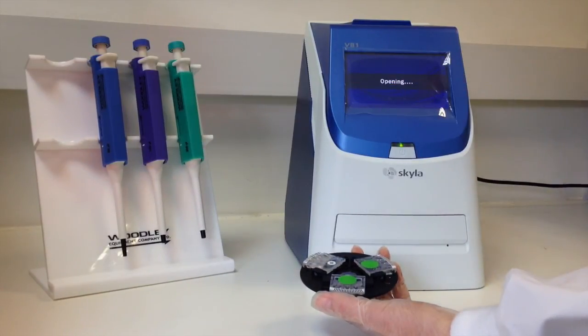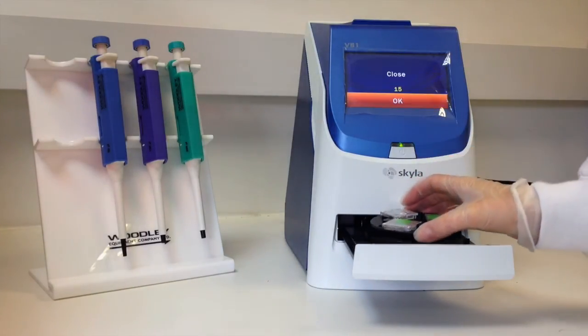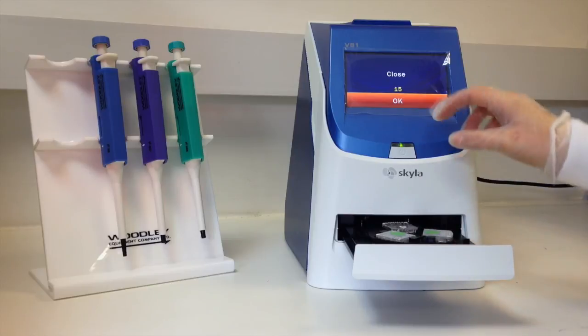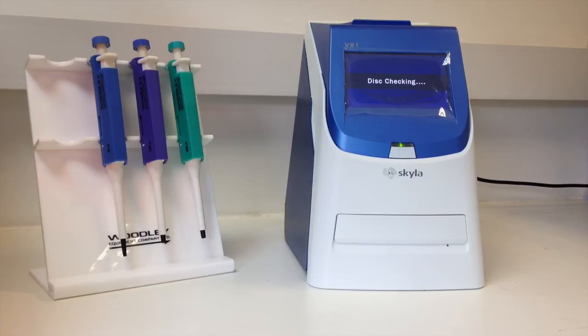Press Start on the VB1 analyzer to open the drawer. Hold the carrier level and place in the drawer. Press OK and enter any necessary patient or sample information. When the test is completed, the system will display and print the results.